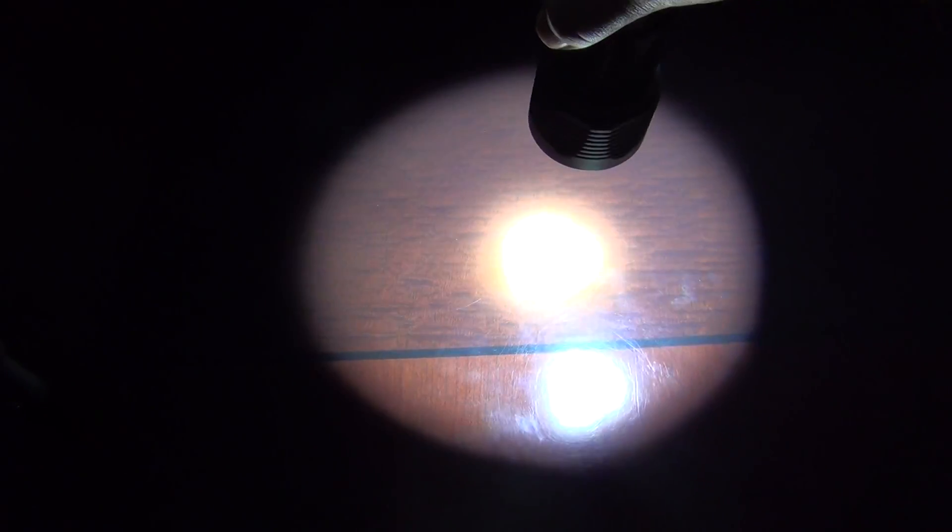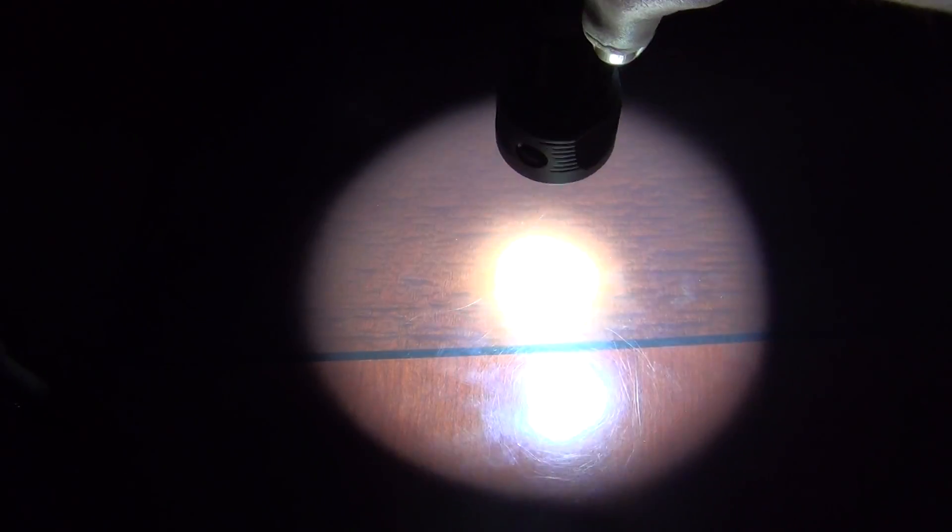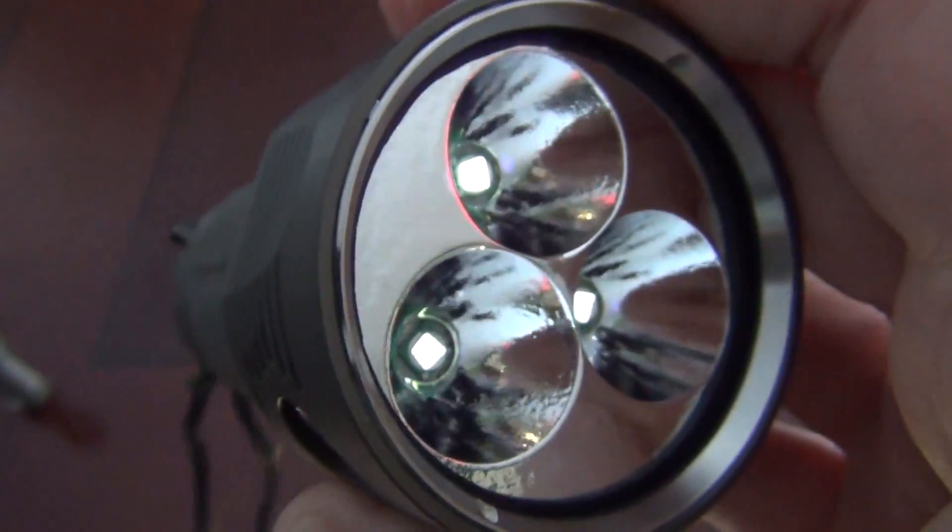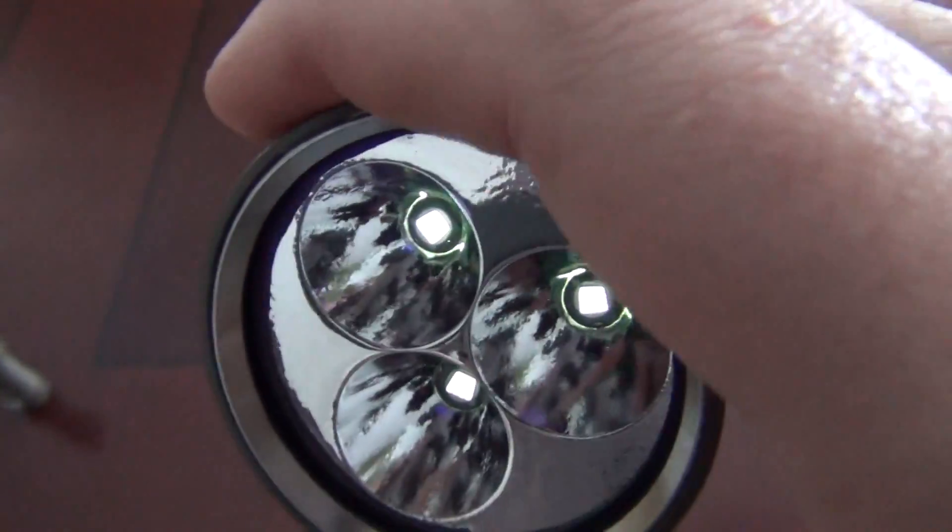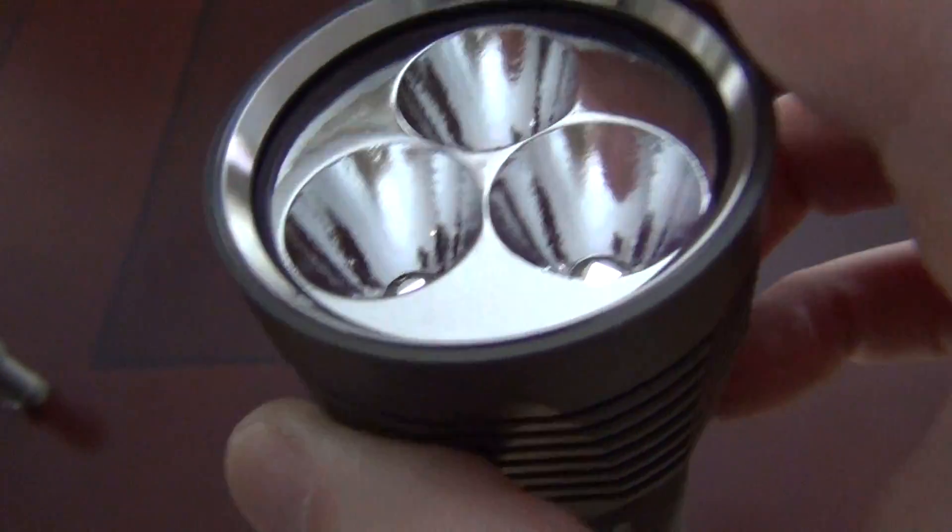Surprisingly round. You can see it's just ever so slightly kind of triangular, but really clean beam. As always, all of the reflectors are orange peel textured.